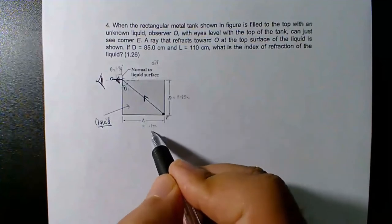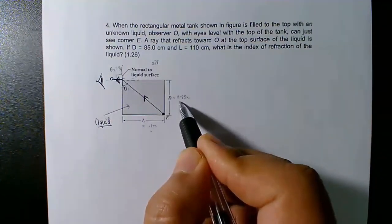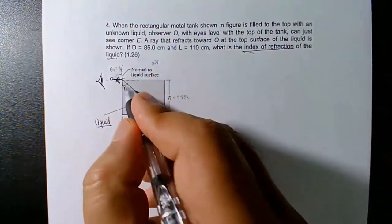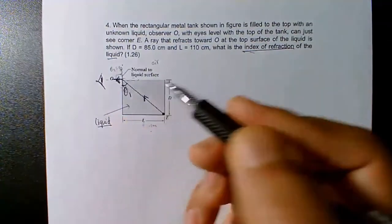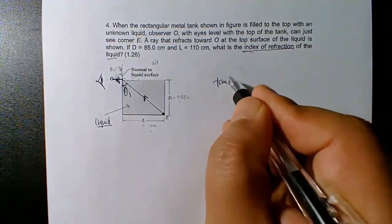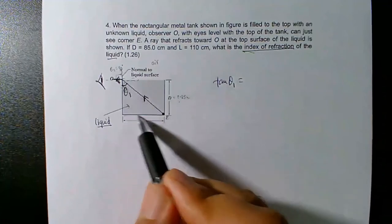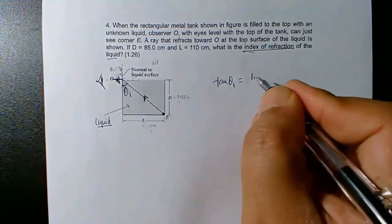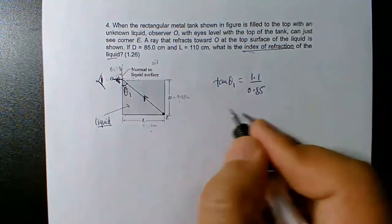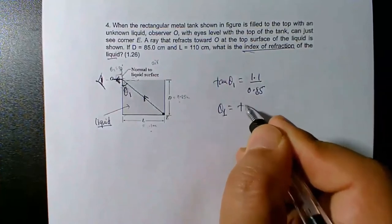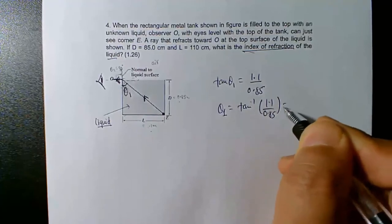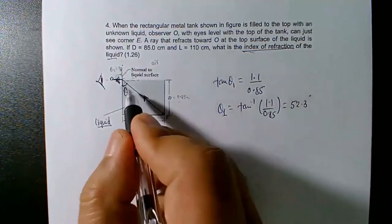The dimensions are 1.1 and 0.85. We need to find the index of refraction of the unknown liquid. First, find the angle of incidence from geometry: tan(theta_1) = 1.1 / 0.85, so theta_1 = arctan(1.1 / 0.85) = 52.3 degrees. That is the angle of incidence in the liquid medium.